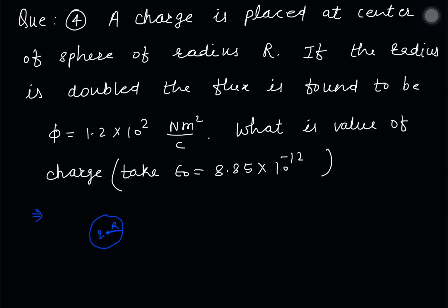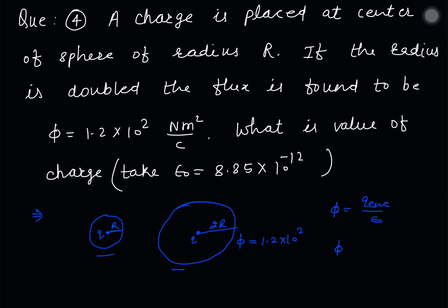The flux through the surface was given an exact value. By Gauss's law, flux equals charge enclosed divided by ε₀. Since the radius changes from R to 2R but the charge enclosed remains the same, the flux remains the same.